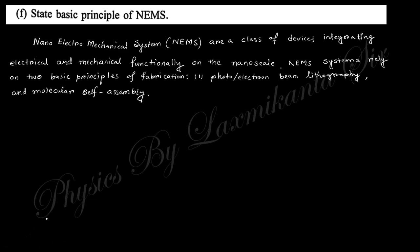Next question: State the basic principle of NEMNs. NEMNs stands for nanoelectromechanical systems. That means a system where nano-sized materials are used for electrical and mechanical property function elements. Both functions are active within this material. The basic principle of fabrication is photoelectron beam lithography and molecular self-assembly. The material has both electrical and mechanical properties.